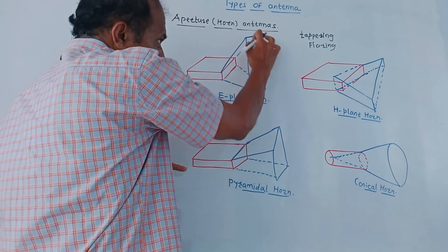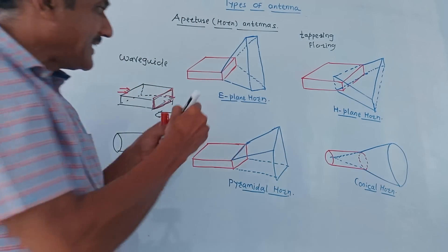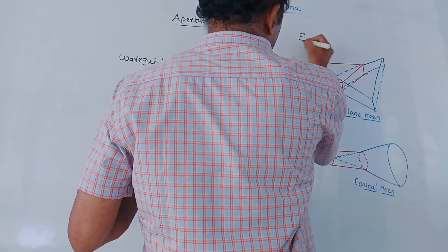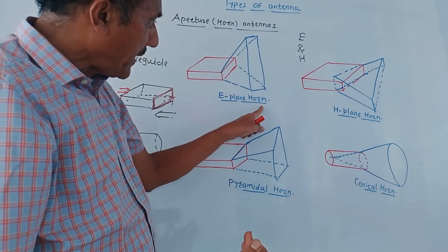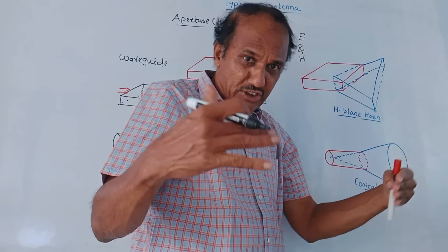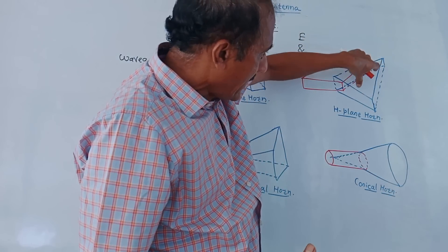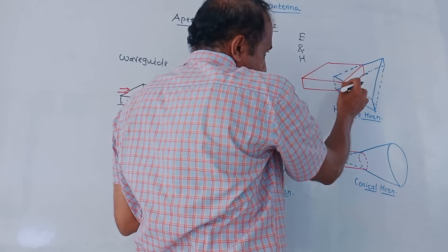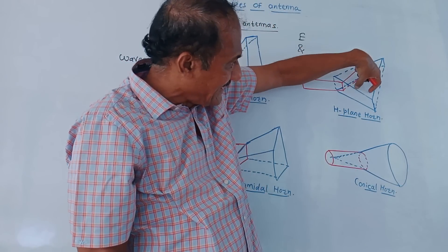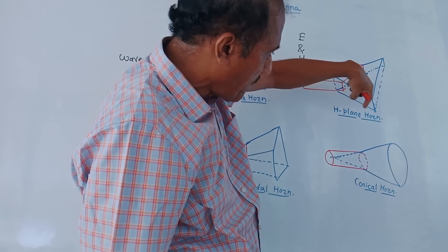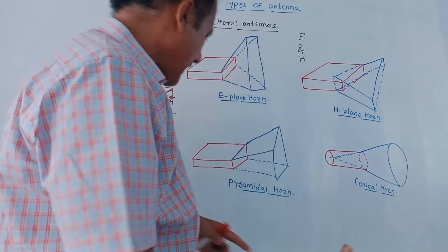The portion drawn in black ink is called the horn. If this horn structure is in the direction of the electric field, it is called an E-plane horn. If the horn is in the direction of the magnetic field, it is called an H-plane horn. If the horn is in both the electric and magnetic field directions, it is called a pyramidal horn.